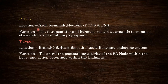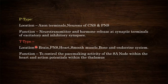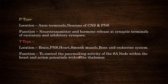P type calcium channels are located in axon terminals and neurons of the central nervous system and peripheral nervous system. Their function is neurotransmitter and hormone release at synaptic terminals of excitatory and inhibitory synapses. T type calcium channels are present in the brain, peripheral nervous system, heart, smooth muscle, bone, and endocrine system. Their functions are to control pacemaking activity of the SA node and action potentials within the thalamus.